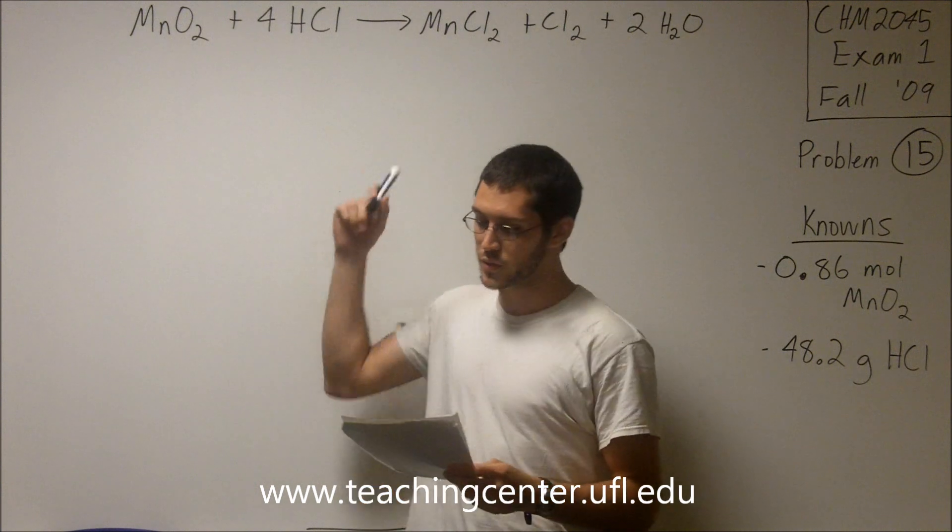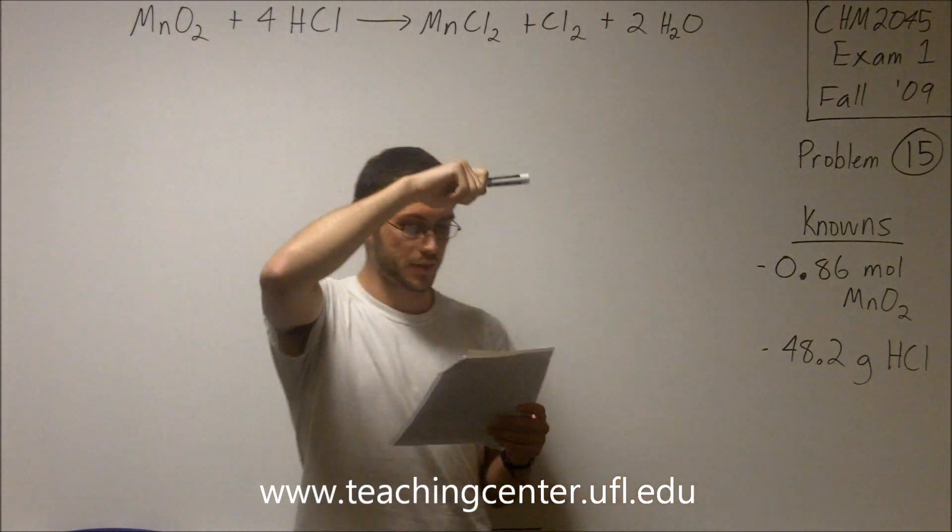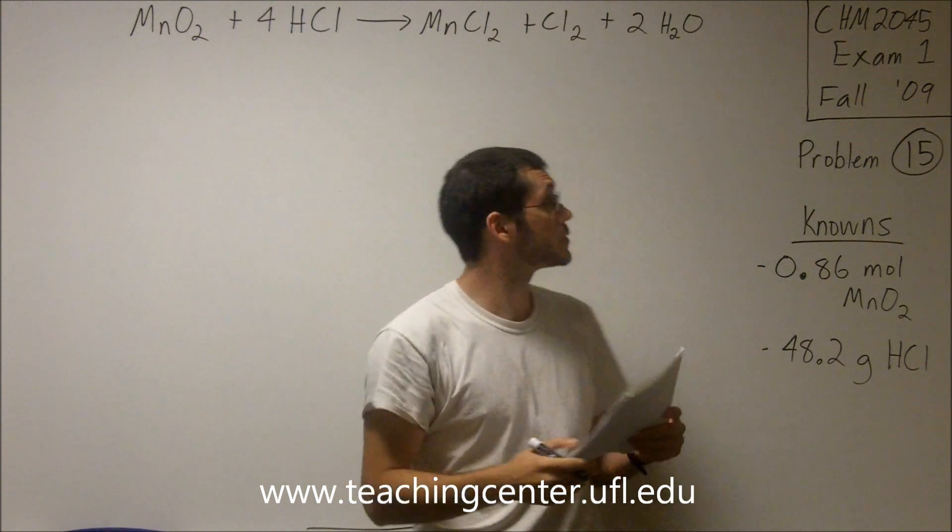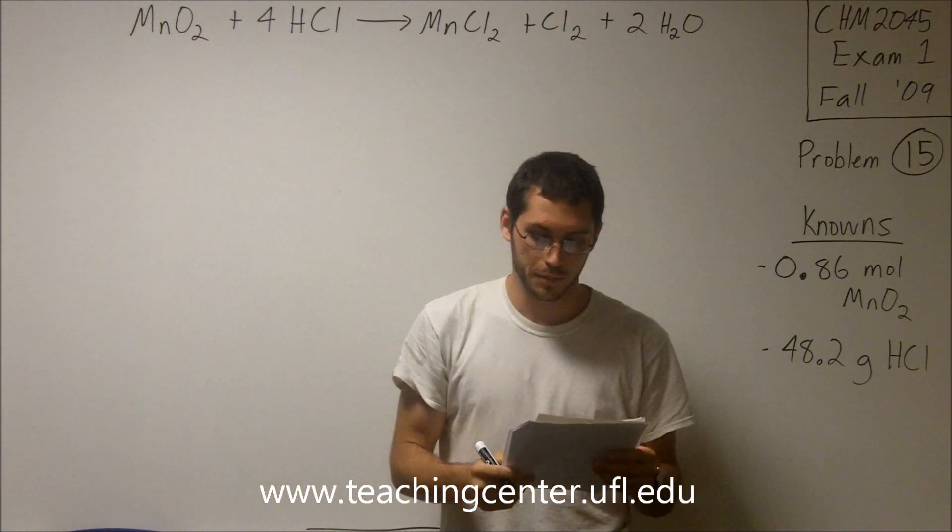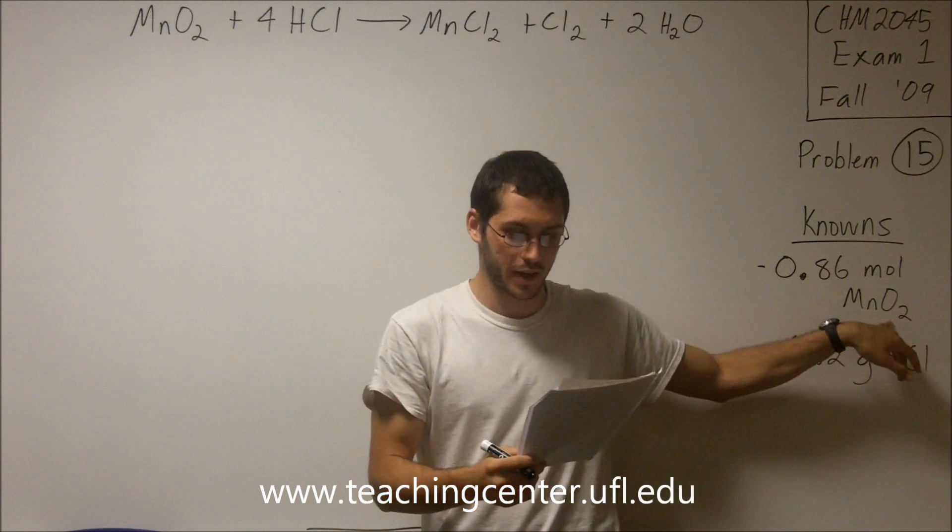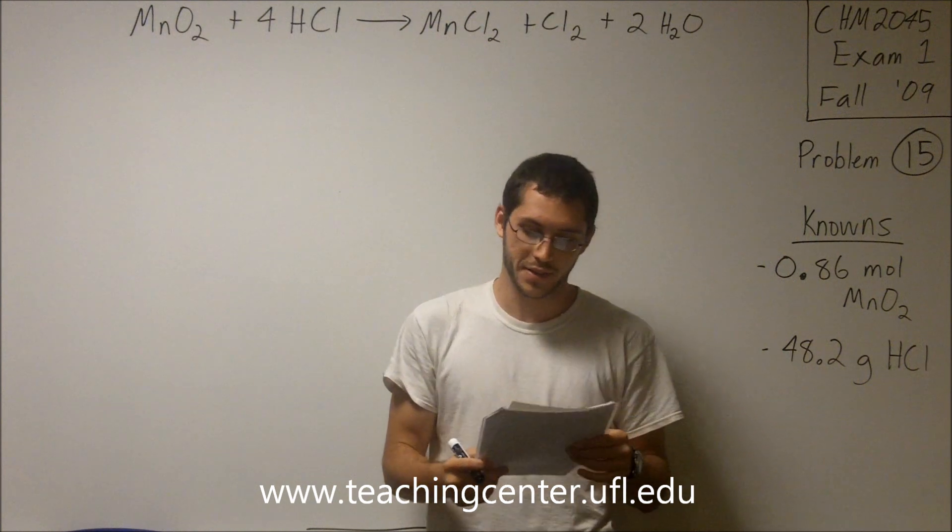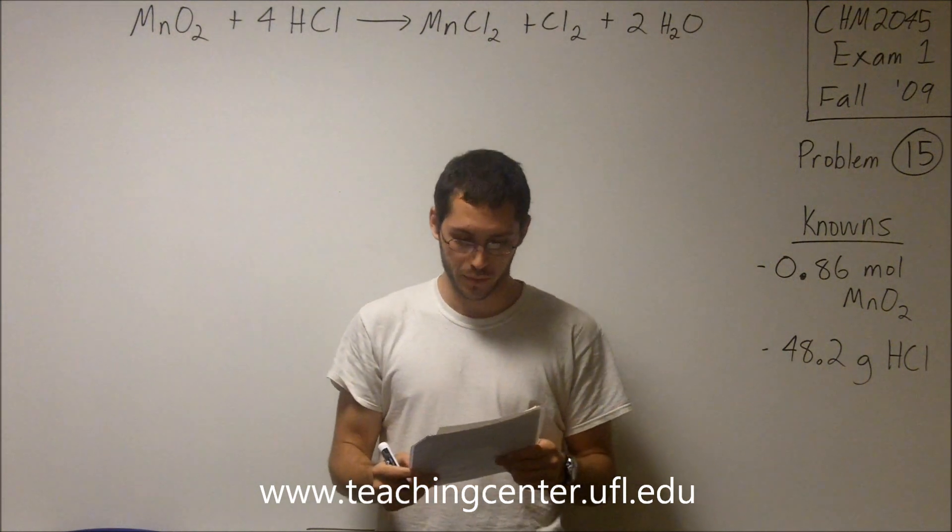Consider the reaction MnO2 plus 4 HCl yields MnCl2 plus Cl2 plus 2 H2O. If 0.86 moles of manganese oxide and 48.2 grams of hydrochloric acid react, how many grams of Cl2 will be produced?